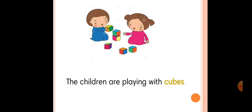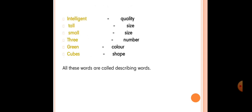The children are playing with cubes. 'Cubes' is a describing word referring to shape. So all these words — intelligent, tall, small, three, green, cubes — are called describing words. These words refer to quality, size, number, color, and shape in the given examples.